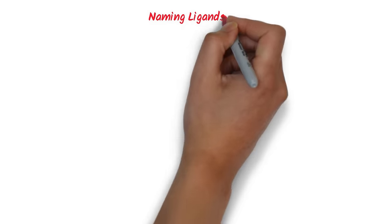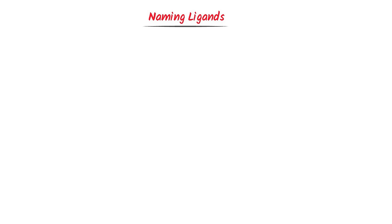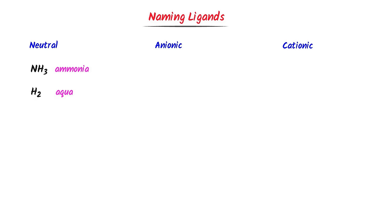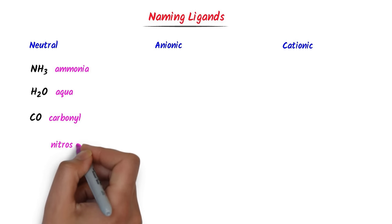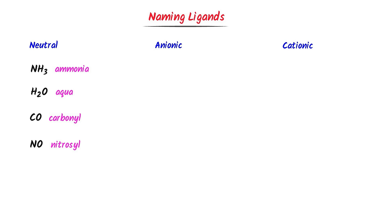Now we will learn naming ligands. We know that there are three types of ligands: neutral, anionic, and cationic. In case of neutral ligands, remember the names of these common ligands like ammonia NH3, aqua H2O, carbonyl CO, nitrosyl NO, thiocarbonyl CS, etc.